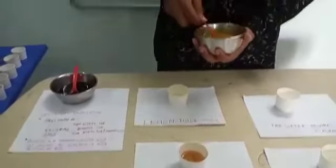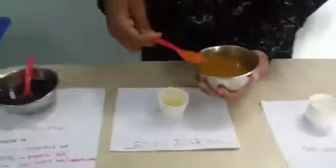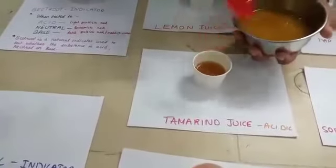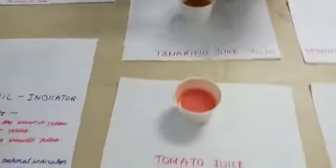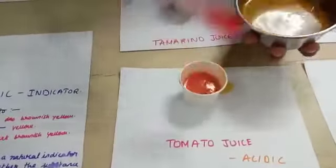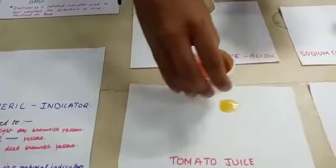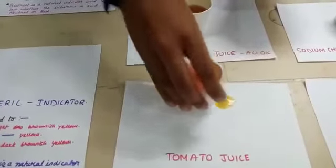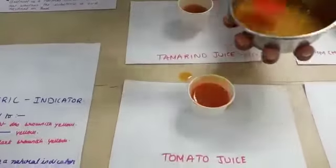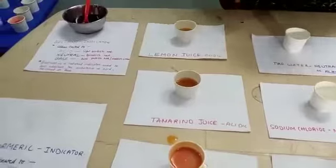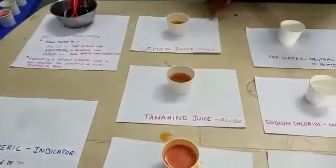Let's start our experiment with lemon, tamarind juice, and tomato juice. It appears in yellow color — these 3 are almost the same in color. So these are acidic medium.